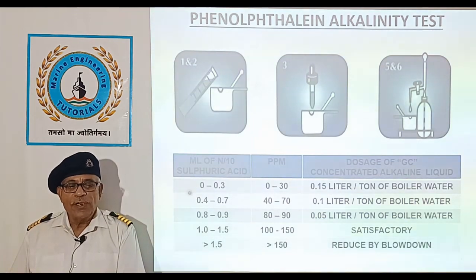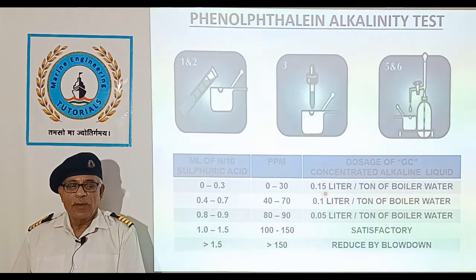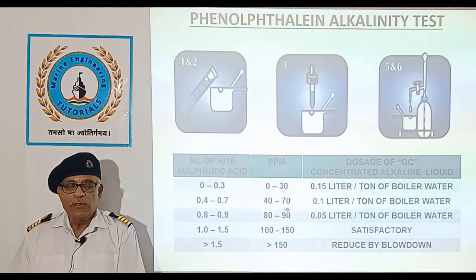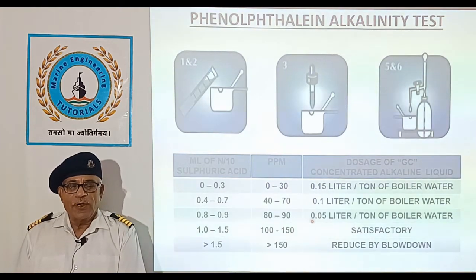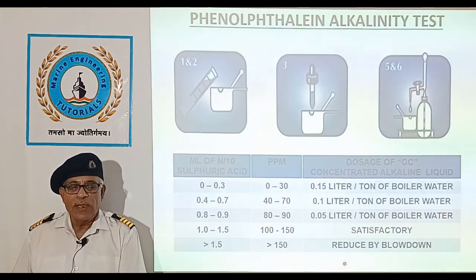If the P-alkalinity is between 0 to 30 ppm, we need to add 0.15 litre of concentrated liquid GC per ton of boiler water. If the ppm is between 40 to 70, we need to add 0.1 litre per ton of boiler water. If it is between 80 to 90, we need to add 0.05 litre per ton of boiler water. If it is between 100 to 150, it is the satisfactory range. In case it goes beyond 150, we have to reduce by blowdown.